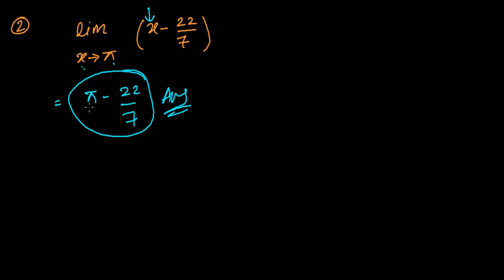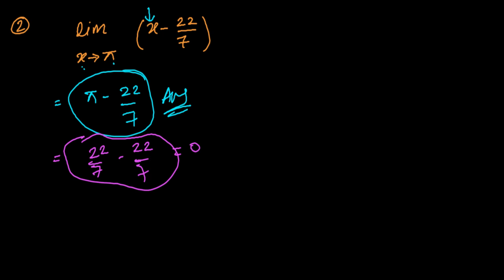One important thing: you might be tempted to substitute pi as 22/7, giving 22/7 minus 22/7 equals 0 — don't do that. You need to plug in x as pi, not replace pi with 22/7. The question says x is approaching the value of pi, that's it. Keep that in mind.